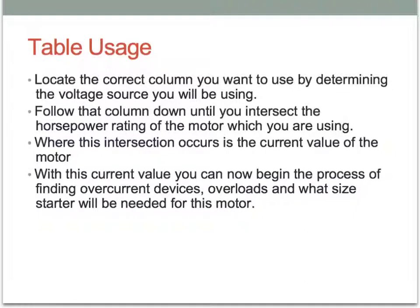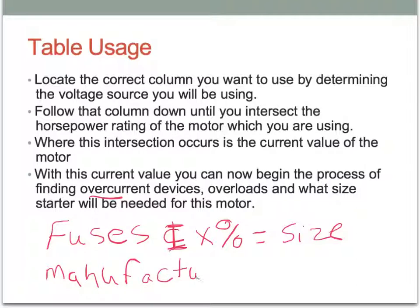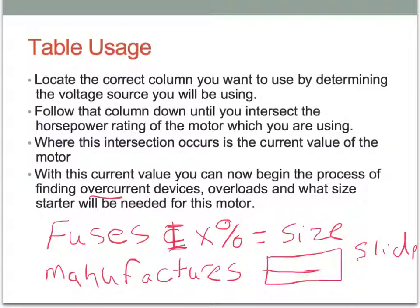So we're going to look at fuses. A lot of times we're going to take that current value — using the letter I for current — and multiply it by some percentage. For either a fuse or a circuit breaker, that multiplication should give us the correct fuse size. If we're looking for overloads, we use the manufacturer's guide — like that rectangular slide rule from Square D. You move it back and forth until you find your correct horsepower rating, and then you can determine the size starter and the size overloads needed for that particular motor.